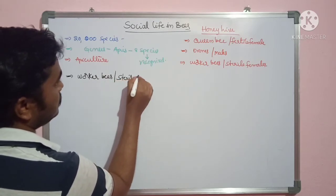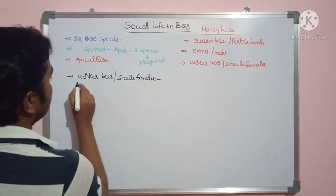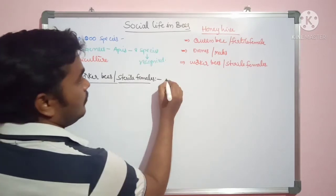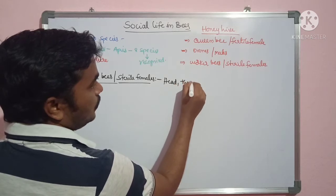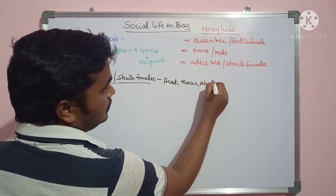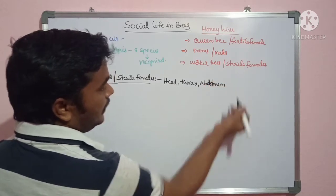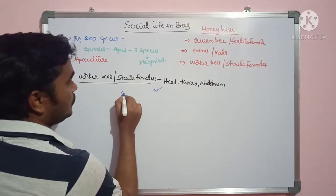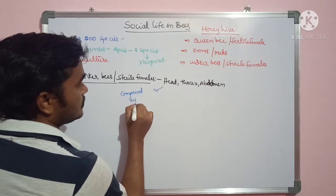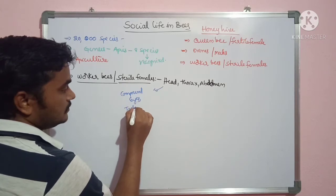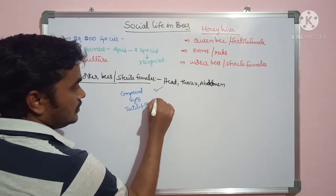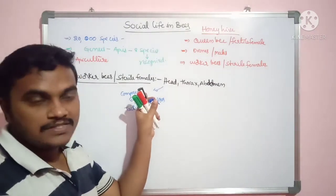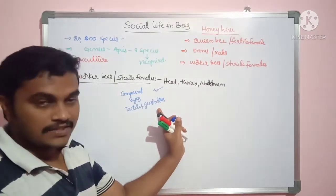Worker bees are also called sterile females. The name indicates they are workers. The body of worker bees contains head, thorax and abdomen regions — three regions. The head contains a pair of compound eyes, then sensory structures which are tactile, and also gustatory structures. Mouthparts — lapping type mouthparts are present in the head region. Antennae are also present.